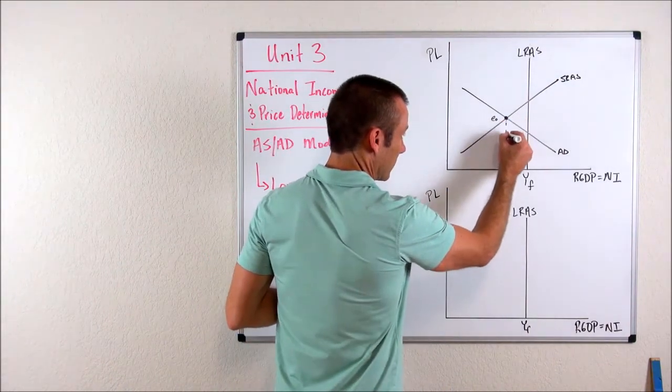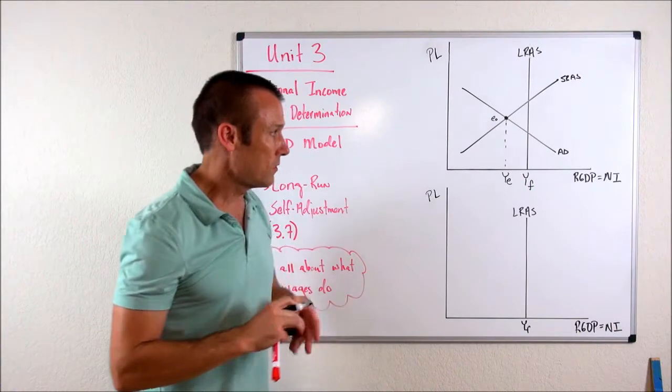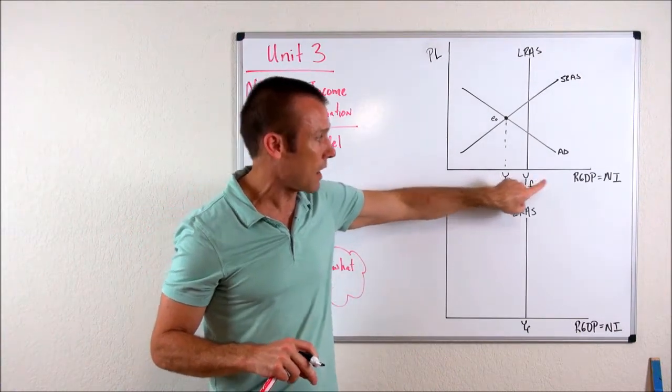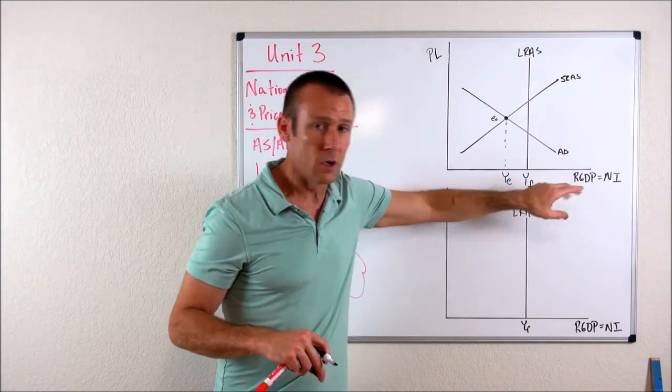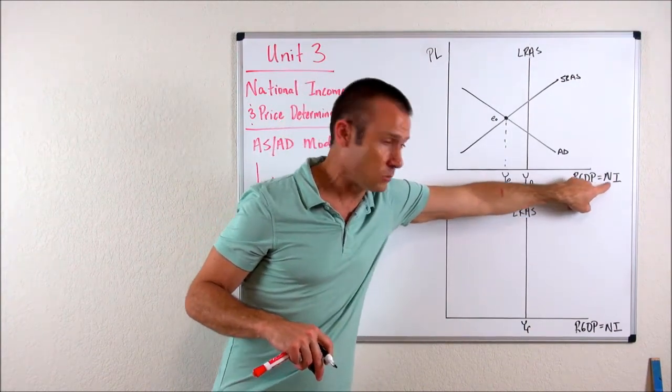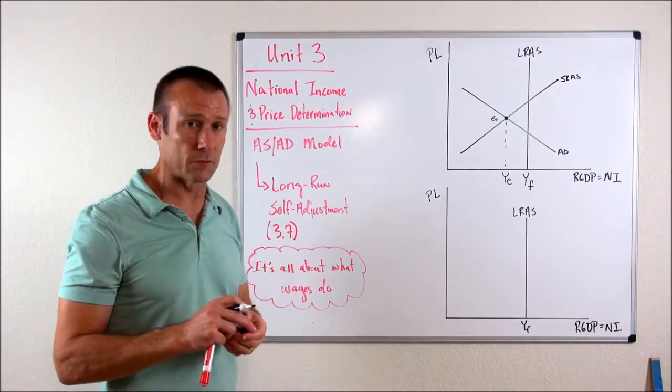These two curves can intersect on the LRAS, which they are by the end of this video going to do that. And when these two curves intersect on the LRAS, we call that our long run equilibrium. But no matter what, where they intersect is our equilibrium point. So I'm going to drill a little dash line down and call that Y equilibrium.